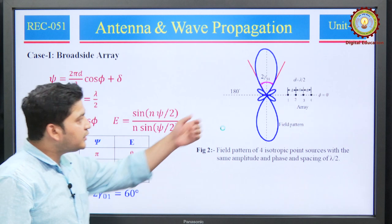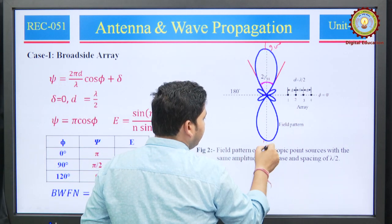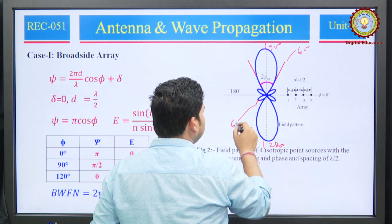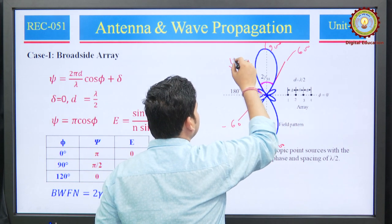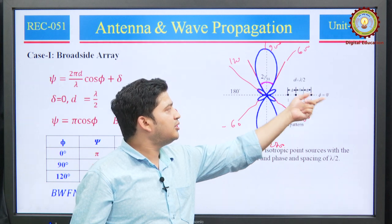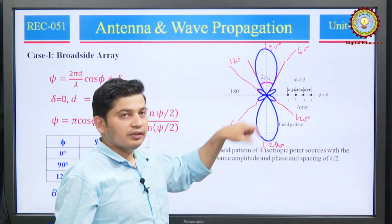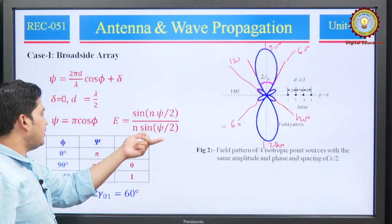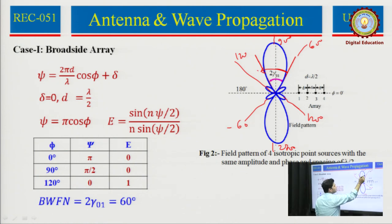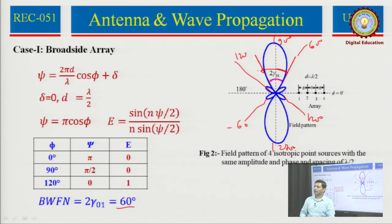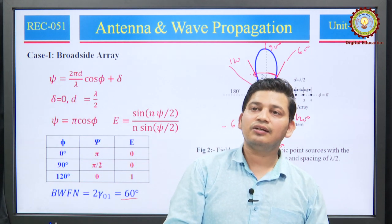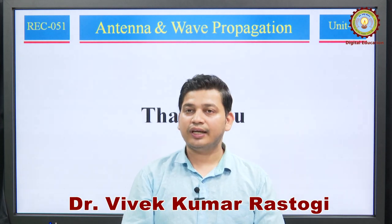This is the figure of the broadside array: maximum radiation is in the direction of 90° and 270°, and minimum (nulls) are at 60° and 120° on both sides, with the next null at 0° and 180° for higher values of m. The normalized electric field is plotted for different values, and the half-power points are at ±30° from the maximum, giving a total half-power beamwidth of 60°. This is how we plotted the field pattern of 4 isotropic point sources with equal amplitude and spacing of lambda/2. In the next lecture, we will visualize the case of end-fire array. Thank you.